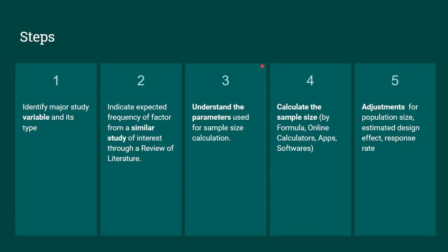We have five major steps in sample size calculation. First, we need to identify the major study variable and its type, whether it is a number or a percentage. Step two is doing a thorough review of literature and identifying the expected frequency from a similar study. Step three is understanding the parameters used for sample size calculation, followed by calculating the sample size, which can be done by formula, online calculators, apps and softwares.